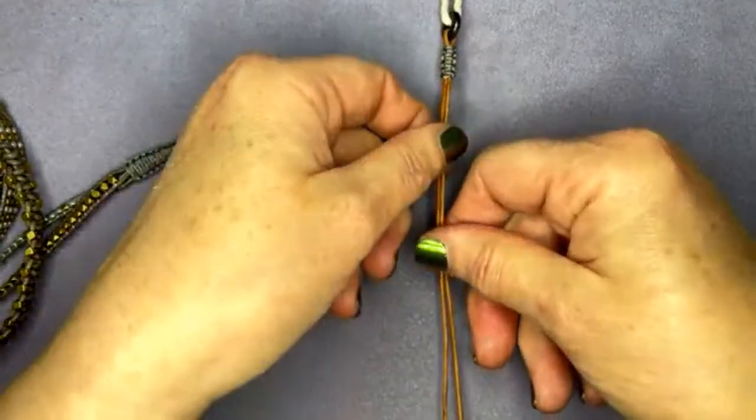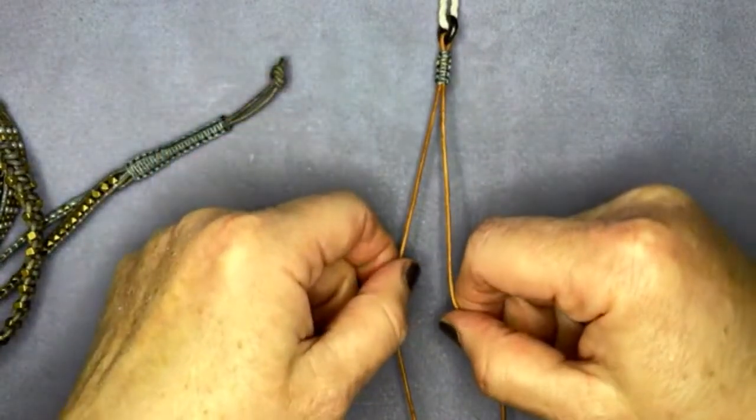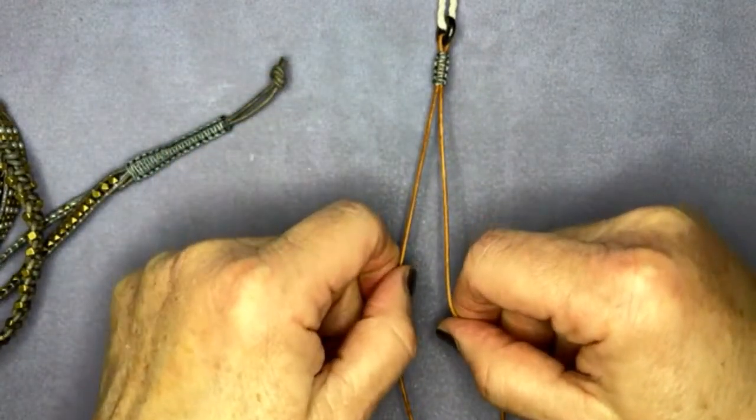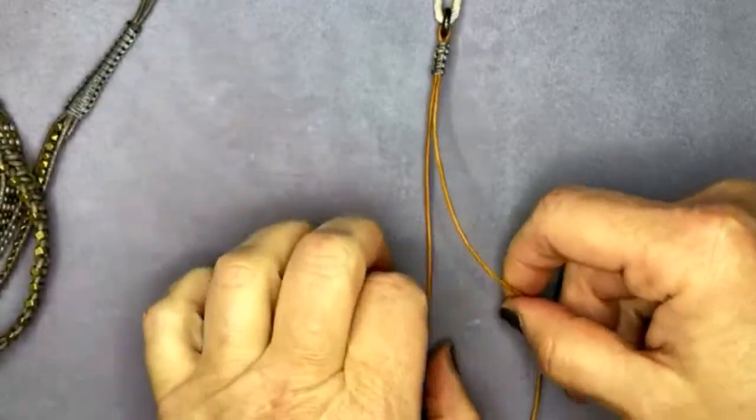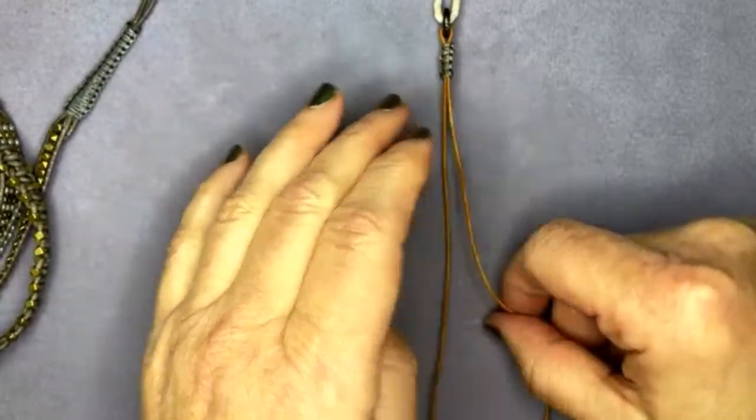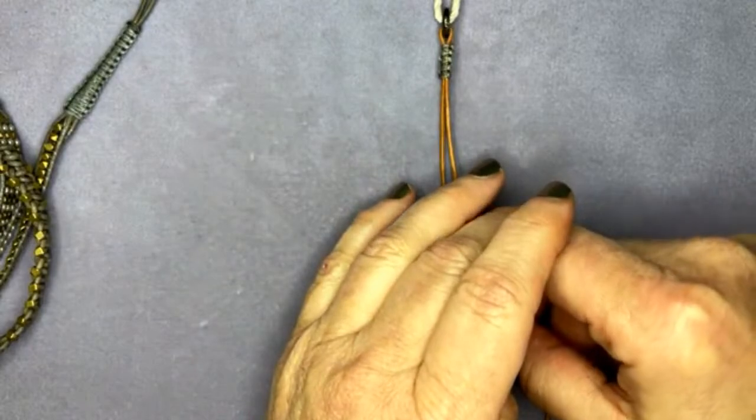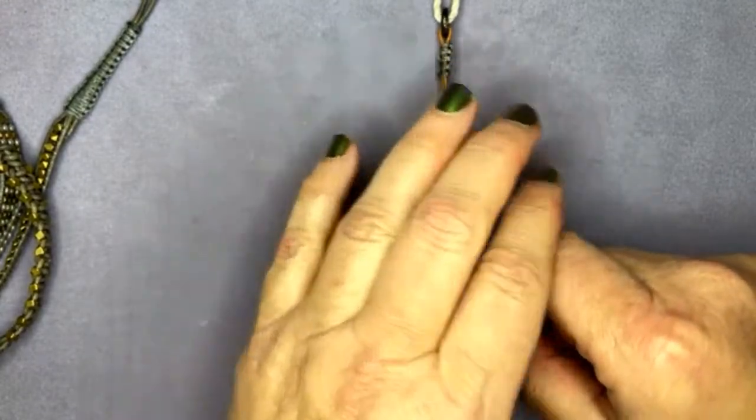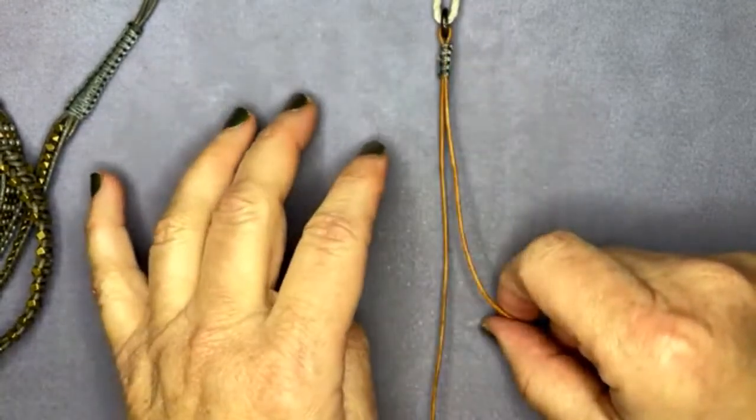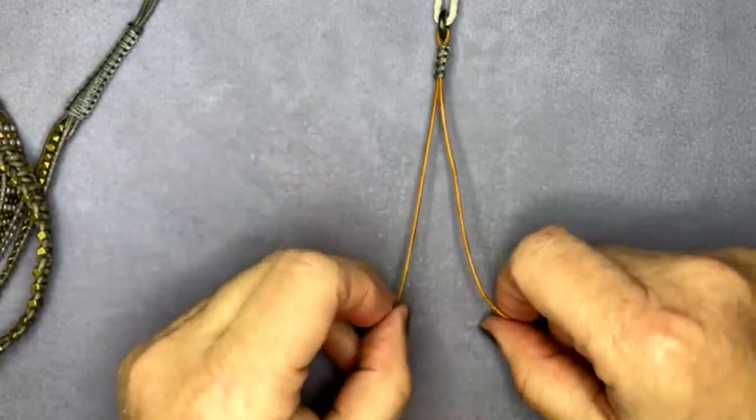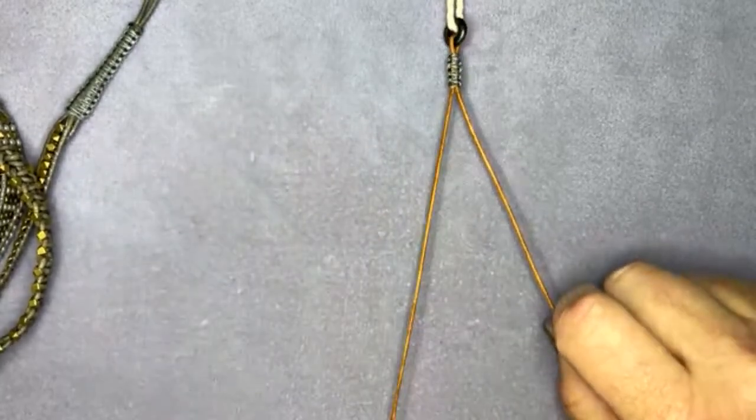So this little charmer gets connected to my board right here. And then all you do is tie a series of half hitch knots going from the left to the right, left to the right, left to right, then right to left, reversing the direction. And you get this really great little knotted section.